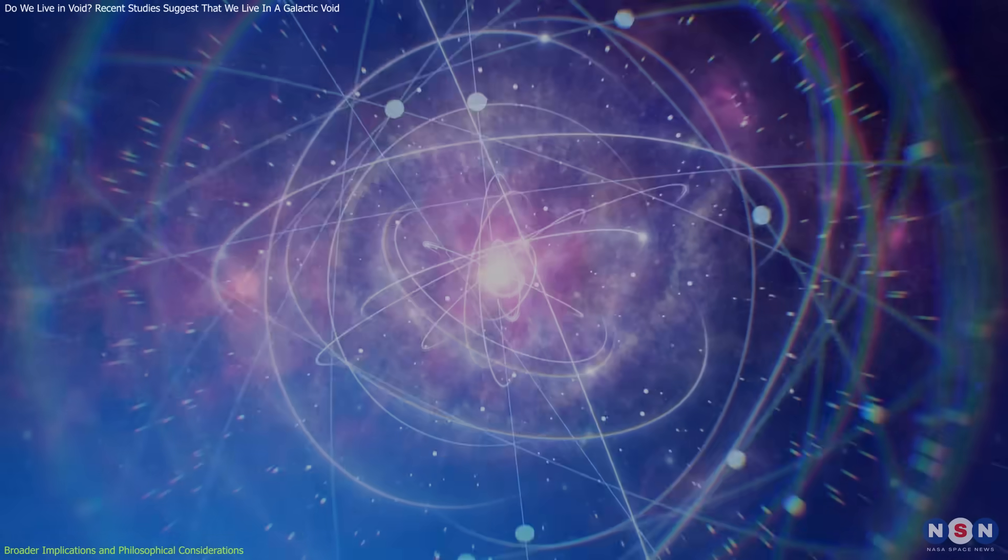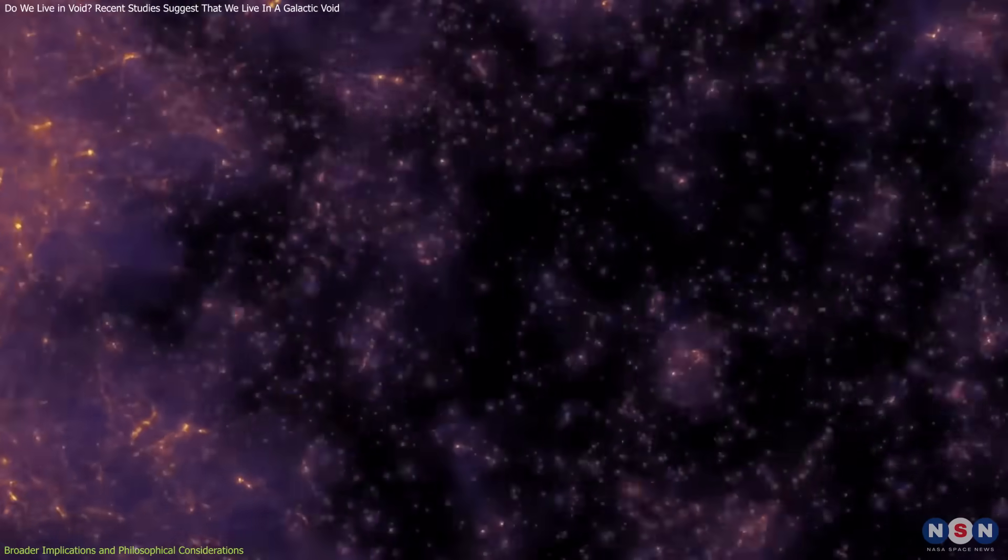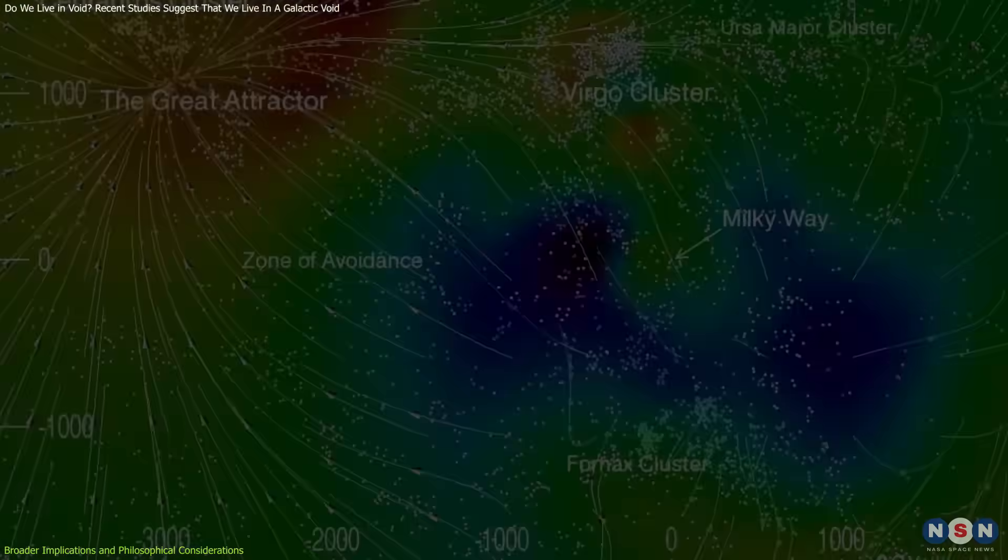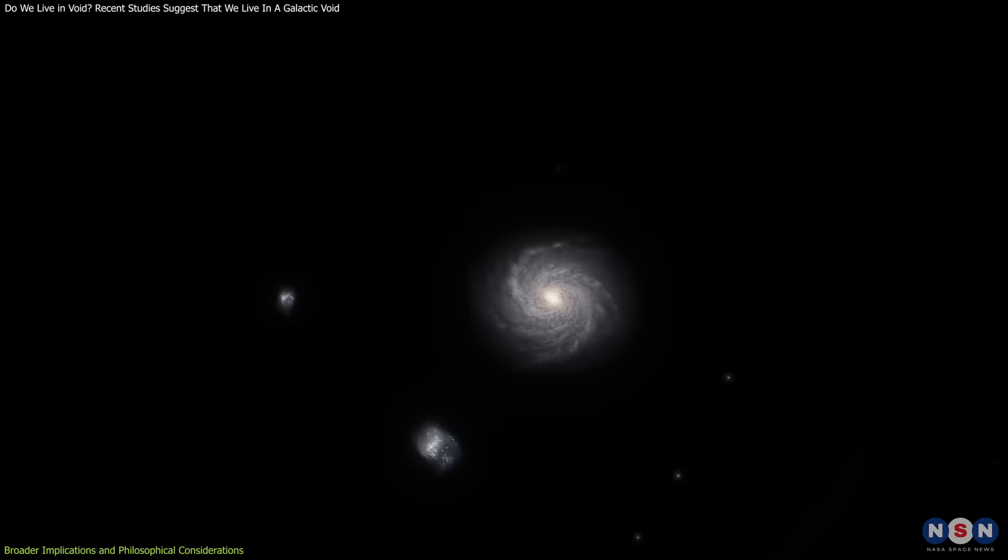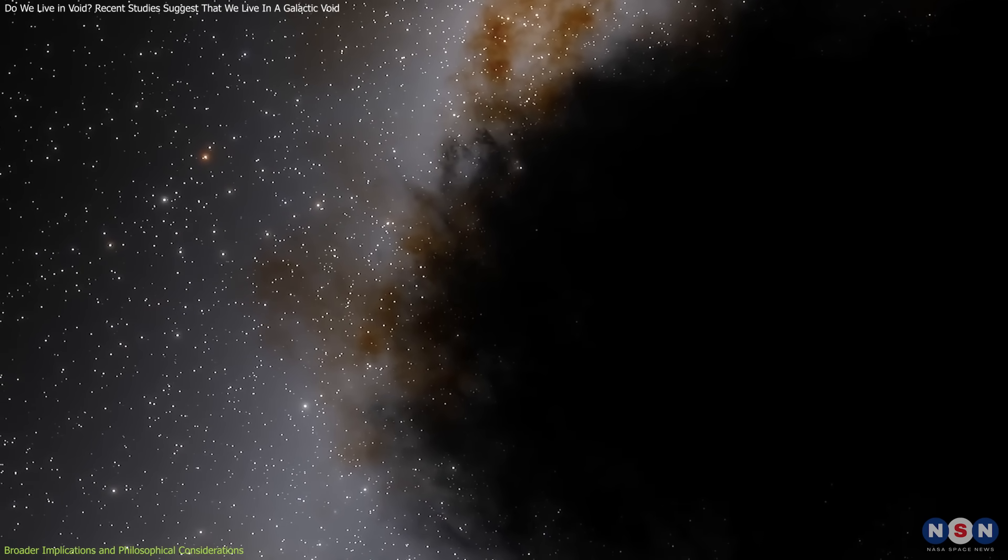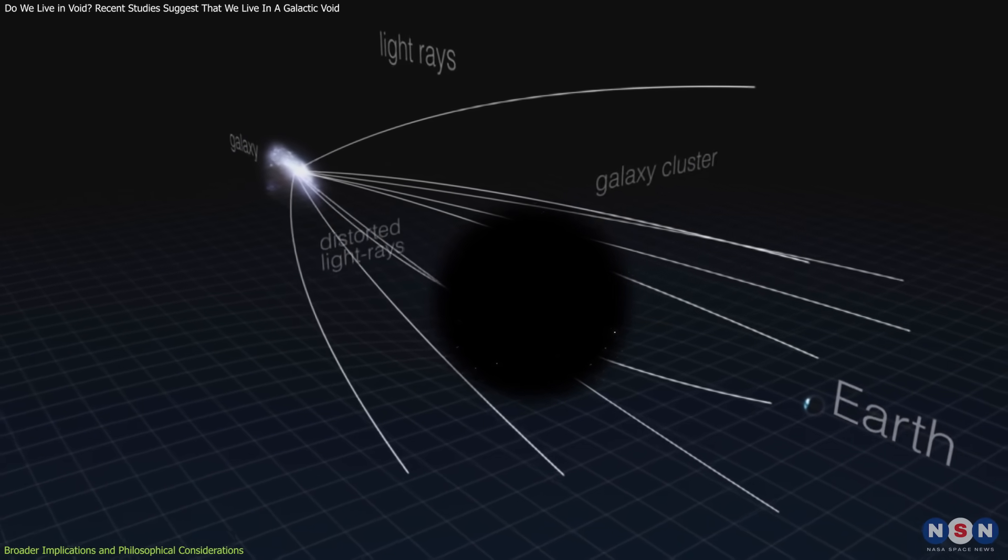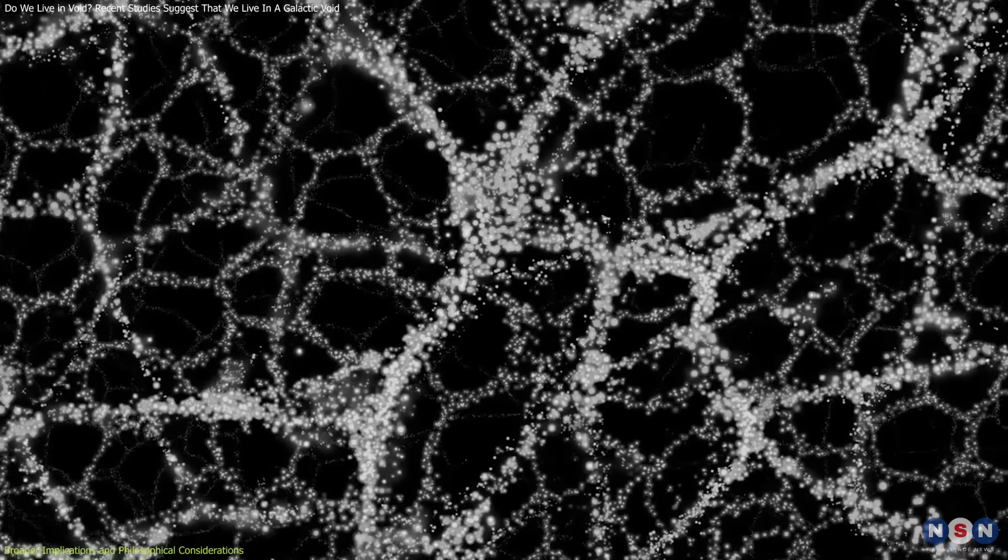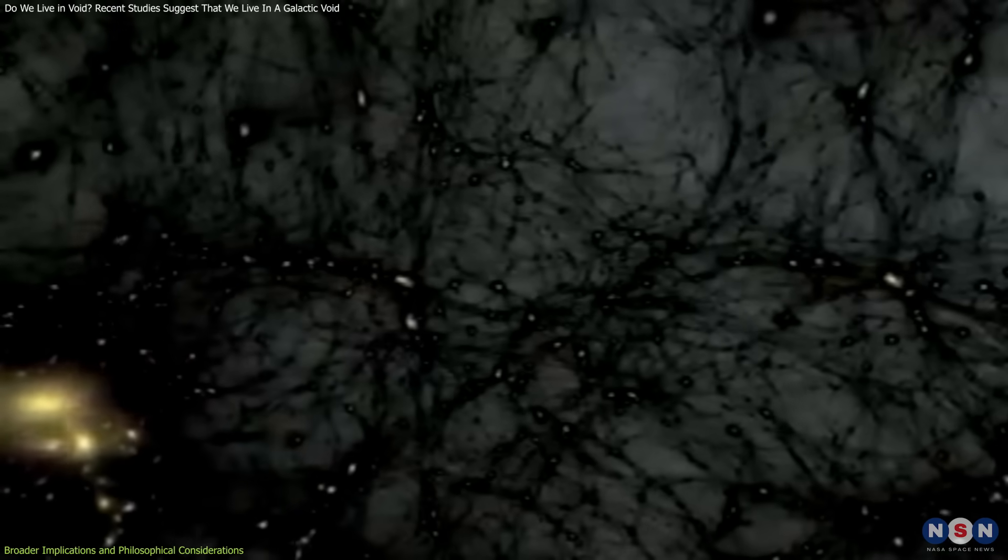Exploring these voids more, we delve into the quantum fluctuations in the early universe. These are believed to be the seeds of all cosmic structure. In regions like our void, these fluctuations may have behaved differently, leading to fewer galaxies and less dense matter. Voids can also serve as natural laboratories for studying phenomena like gravitational lensing, where the path of light from distant objects is bent by gravity. The way light bends around and through the void can tell us about the distribution of dark matter and dark energy, which are invisible, but account for most of the universe's mass energy content.